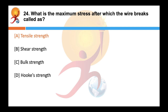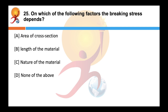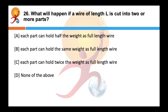The force by application of which the wire breaks is called the breaking force. Breaking stress depends on the nature of the material. Breaking force equals P times A, where P is the breaking stress — a constant for a given material that does not depend on dimensions like length or thickness. If a wire of length L is cut into two or more parts, each part can hold the same weight as the full-length wire, because breaking force is independent of the length of the wire.